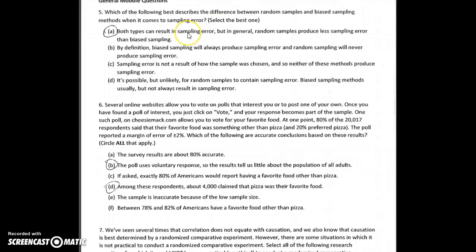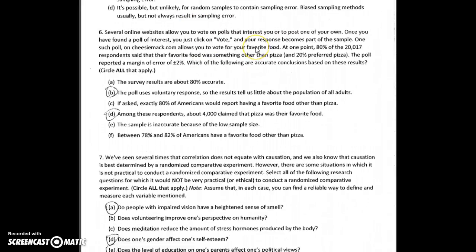The idea of random sampling does reduce sampling error, but sampling error is something you're almost always going to have. Your sample is always going to be a little different than your population — the idea is that with randomness, we make that difference as small as possible. When we're dealing with an online survey, these snap polls or voluntary response polls really don't tell us much at all. Although we do know that of the particular people who responded, 20% of the 20,000 preferred pizza. So we can take 20% times 20,000 and get roughly about 4,000 of the ones who answered who said they did like pizza.